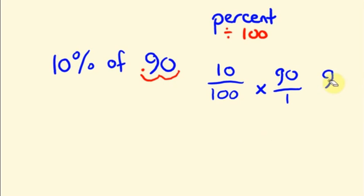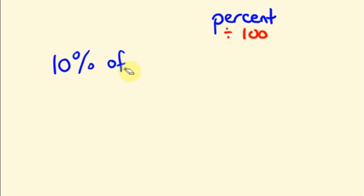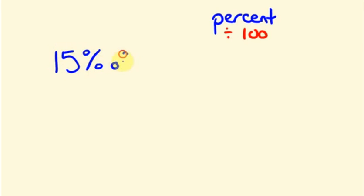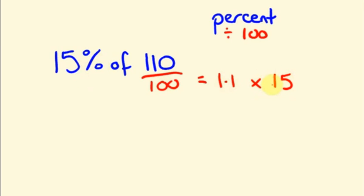I told you the simple strategy. Let's see another example: fifteen percent of one hundred and ten, that is 110. First of all I have to divide 110 by hundred. By doing so, the zero gets cancelled and I get one point one. I multiply it with fifteen to get the answer: one point one into fifteen is sixteen point five.